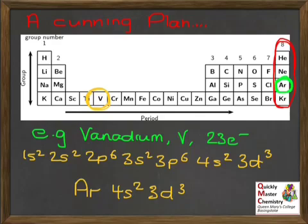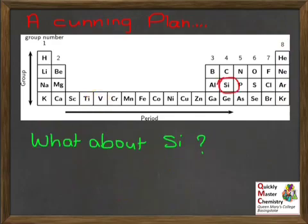We can do this for any of the elements. Let's have a practice. What about silicon? Pause the video at this point. What would be this abbreviated form of the electronic configuration for silicon? And it's this. Silicon's in period 3. At the end of period 2 is neon. So, we can use neon to represent the 1S2, 2S2, 2P6 and just give the bit of the silicon configuration that comes beyond that: 3S2 and then 3P2.